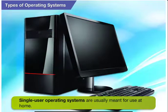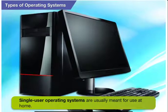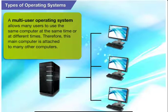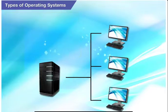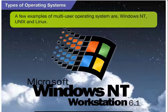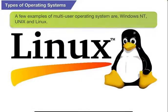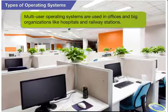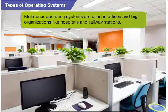Single user operating systems are usually meant for use at home. A multi-user operating system allows many users to use the same computer at the same time or at different times. Therefore, this main computer is attached to many other computers. A few examples of multi-user operating systems are Windows NT, Unix, and Linux. Multi-user operating systems are used in offices and big organizations like hospitals and railway stations.